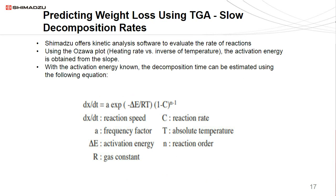Certain materials will take a very long time to decompose. In that case, Shimadzu offers a kinetic analysis software used to evaluate these very slow rates of reaction. To determine these slow rates, you need to measure the activation energy. In order to do that, we use an Ozawa plot — a plot that graphs the heating rate versus the inverse of temperature. From there you measure the slope, and from that you can obtain the activation energy. Once the activation energy is known, you can measure the decomposition time, estimated using an equation based on the Arrhenius equation, which is frequently used in kinetic analysis for rates of reaction.